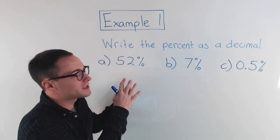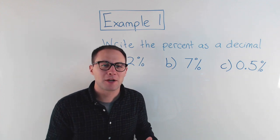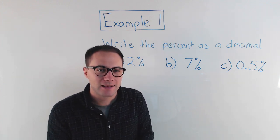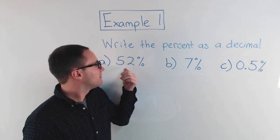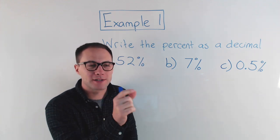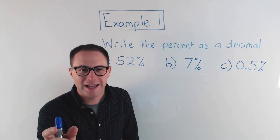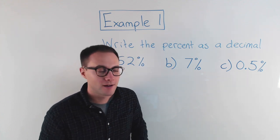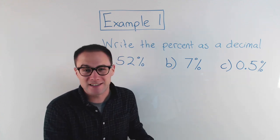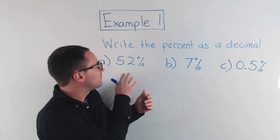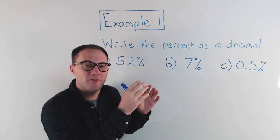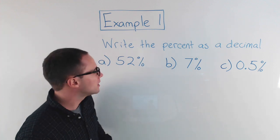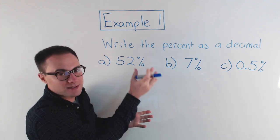Before we get into example one, let's talk a little bit about percent in general. What does percent mean exactly? If I look at 52 percent — well, percent means per cent, and cent means a hundred. There's a hundred years in a century, a hundred legs on a centipede, a hundred cents in a dollar. So 52 percent means 52 per 100 — that's what it literally means.